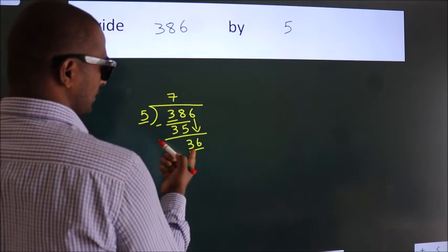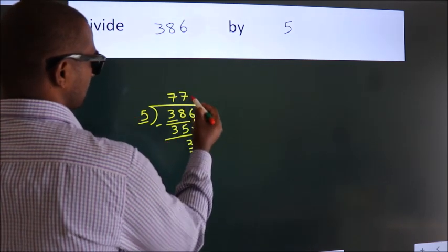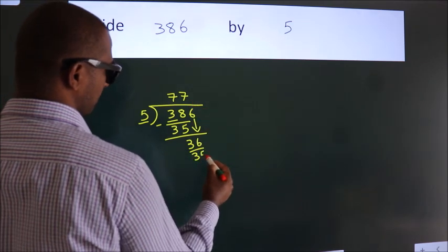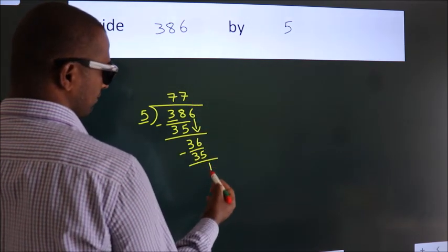A number close to 36 in the 5 table is 5 times 7 equals 35. Now, we subtract. We get 1.